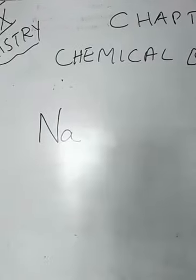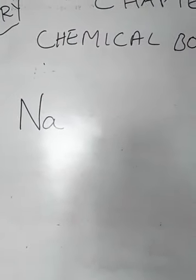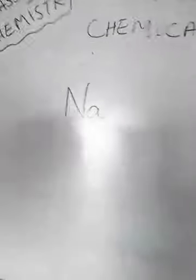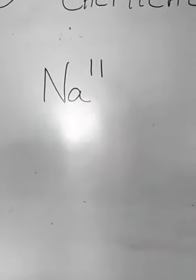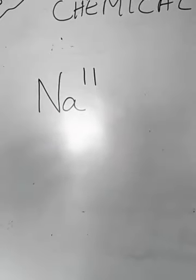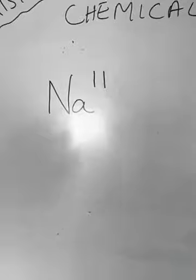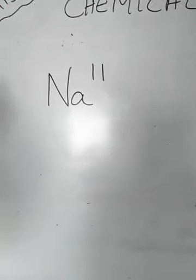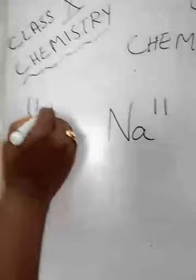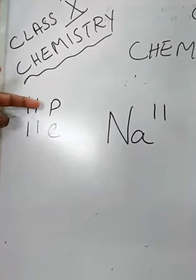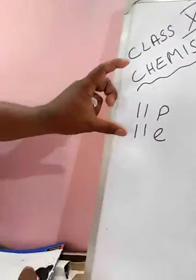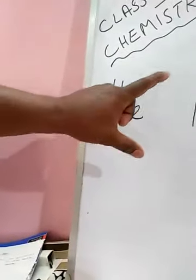Now this is a sodium atom. The atomic number of sodium is 11. We know that an atom is electrically neutral — that means it has 11 protons and 11 electrons. Equal number of protons and electrons in the atom. So this is called a neutral atom.